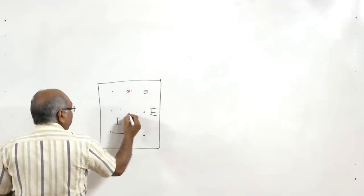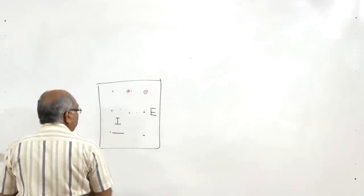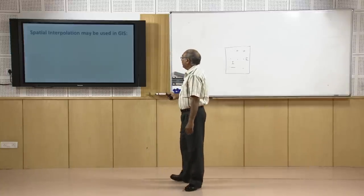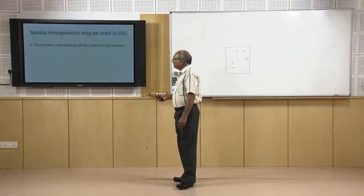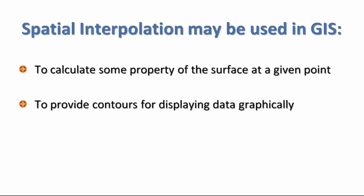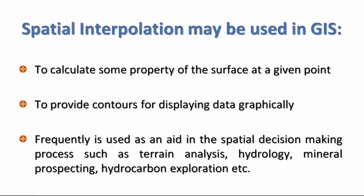If a point is in the middle of two observations, both will have equal influence. Interpolation based on Tobler's law is used in GIS to calculate properties of a surface at a given point — maybe elevation, groundwater level, or water quality — to provide contours for graphical display, and it is frequently used in terrain analysis, hydrology, mineral prospecting, and hydrocarbon exploration.